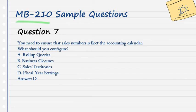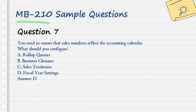Question 7. You need to ensure that sales numbers reflect the accounting calendar. What should you configure? A. Roll-up queries. B. Business closures. C. Sales territories. D. Fiscal year settings. Answer: D.